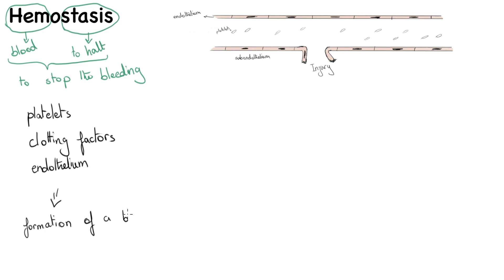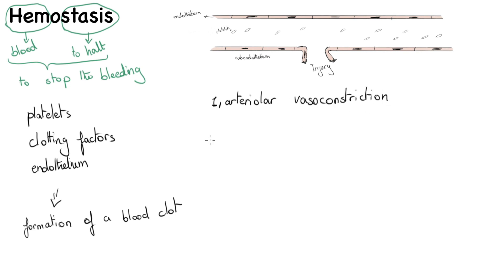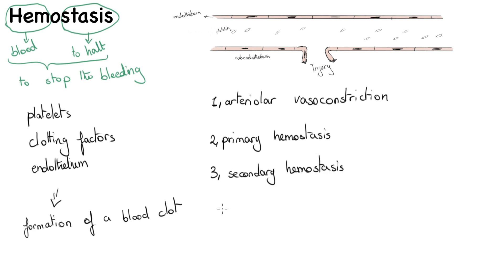Hemostasis occurs at the site of injury and ends up in the formation of a blood clot to prevent the extent of bleeding. It has four stages: first, arterial vasoconstriction to lower blood flow to the site of injury by narrowing the vessel; second, primary hemostasis, which involves aggregation of platelets to form a plug; third, secondary hemostasis, where fibrin strands soothe the plug together to make it stronger; and fourth, contraction of fibrin strands and platelets forming a solid, permanent plug.